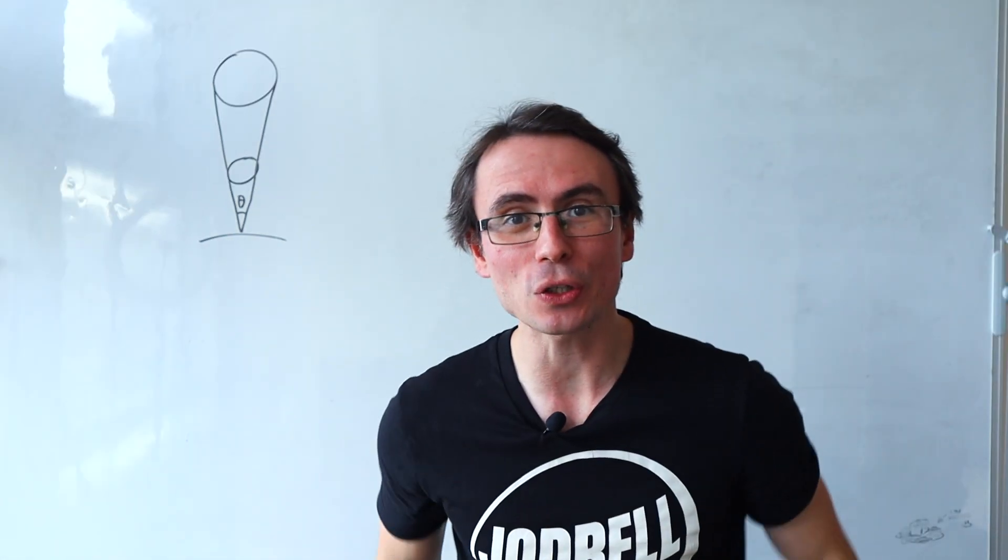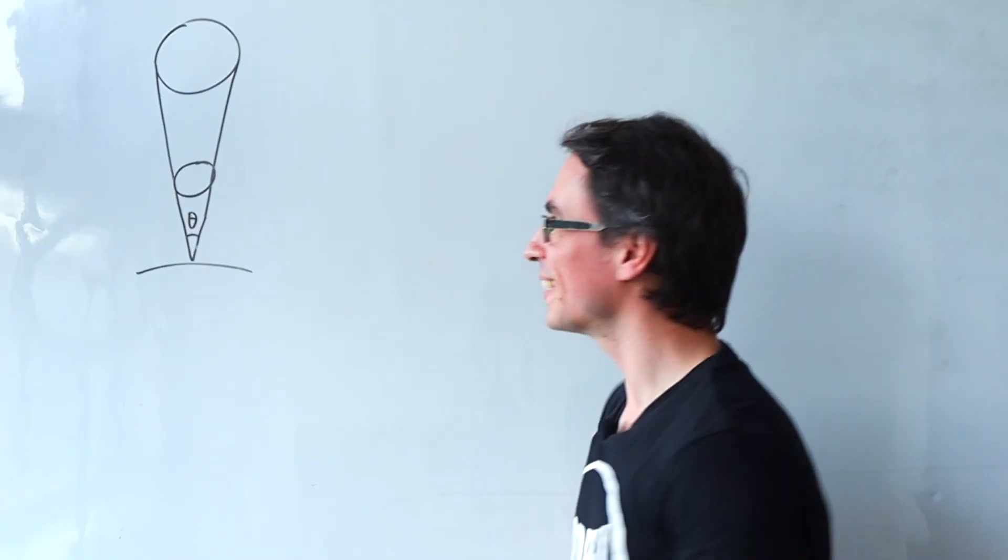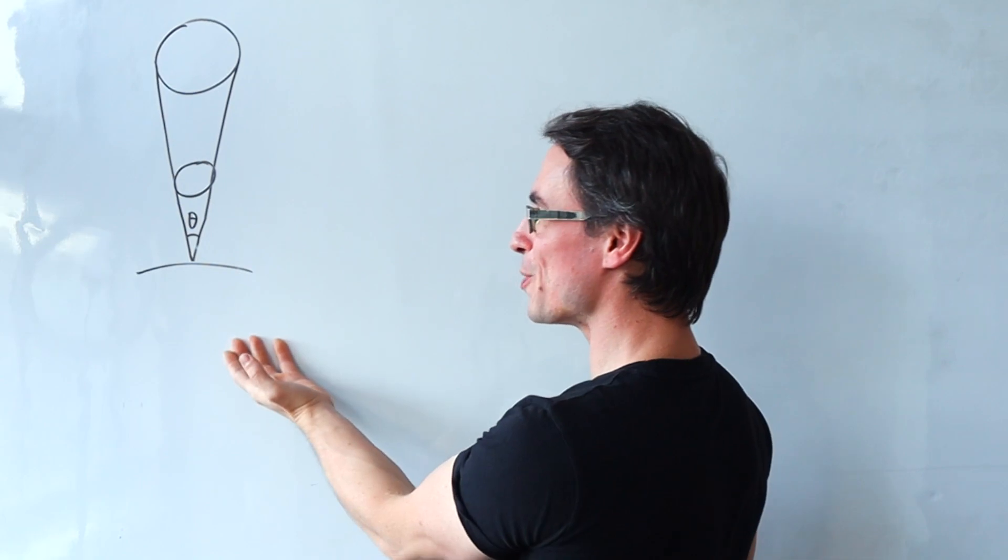We always start off by writing something that we're definitely sure of. For instance here is the sun moon earth system.